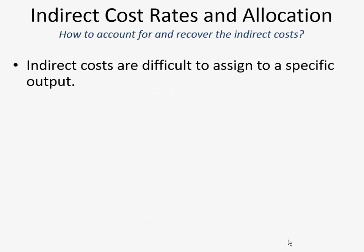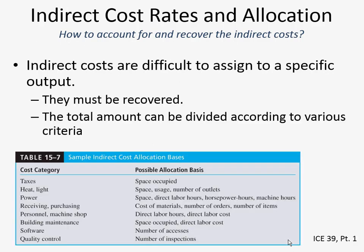We've just talked about how indirect costs are difficult to assign to a specific output. One of the things we sometimes do is try to figure out how to allocate. On the left are different categories of items that can be considered indirect — though they're not always indirect; sometimes it is possible to assign them to a specific output. In many cases these are support and infrastructure costs: taxes, heat, power, receiving. Let's say you have to pay taxes — your company every year has to cover a certain amount, and the question is how do you decide how much of the tax bill to put towards the thing that you're making?